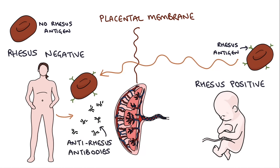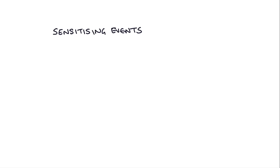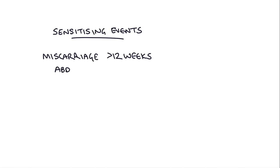So how does the baby's blood get into the mother's bloodstream? This can happen at any sensitizing events. This could be a miscarriage after 12 weeks, abdominal trauma where there's been some bleeding inside the placenta and blood cells have crossed over, or it could be at birth when there's obviously lots of bleeding and mixing of mum and baby's blood.